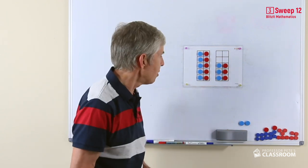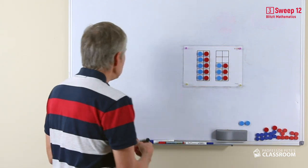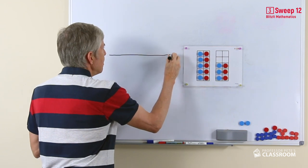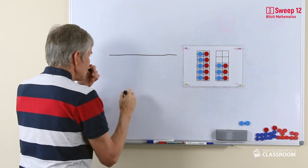We can also use an open number line. You'll see this in the think bubble resources that go with this. I've squeezed this up a little bit.